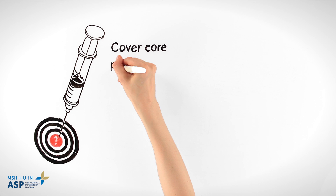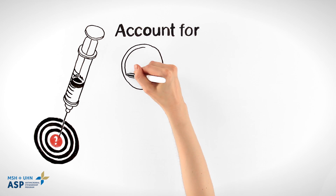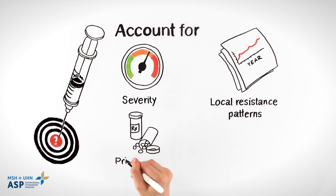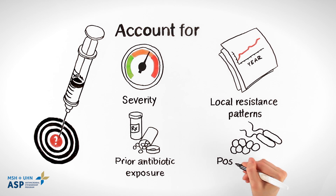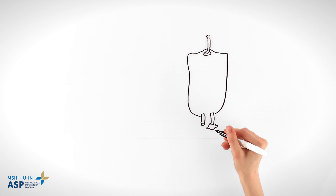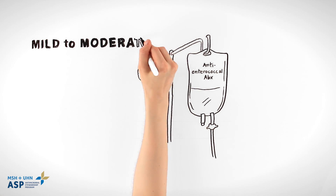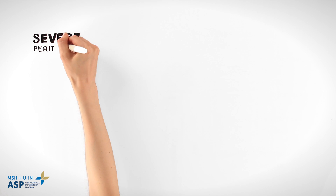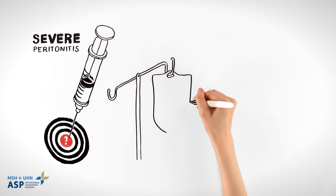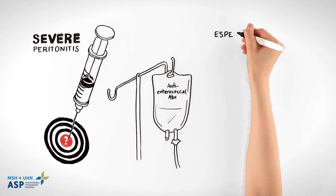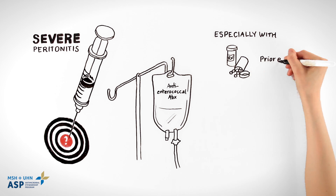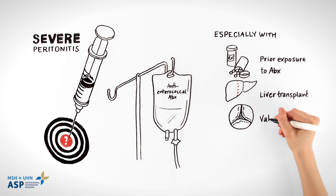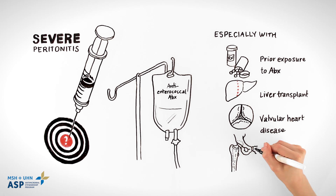Empiric therapy should cover core pathogens and account for severity of infection, local resistance patterns, prior antibiotic exposure, and possible resistant organisms. Anti-enterococcal antibiotics in mild to moderate community-acquired infections don't alter outcomes. In severe infections, empiric therapy should include anti-enterococcal activity, particularly for those with prior exposure to broad-spectrum antibiotics, liver transplant patients, and patients with valvular heart disease and prosthetic devices.